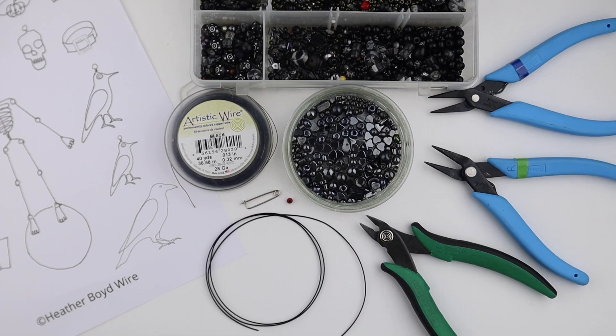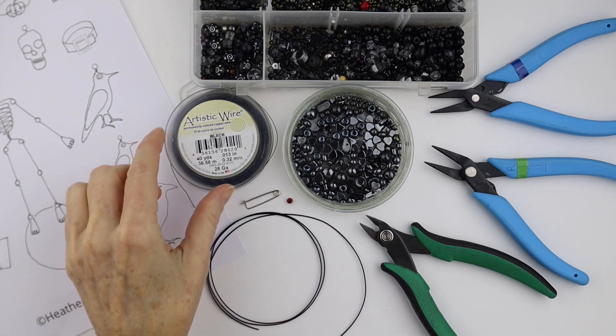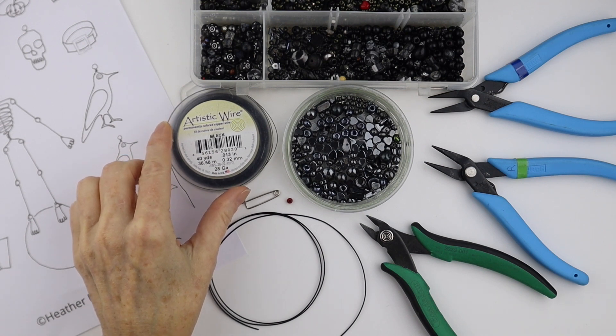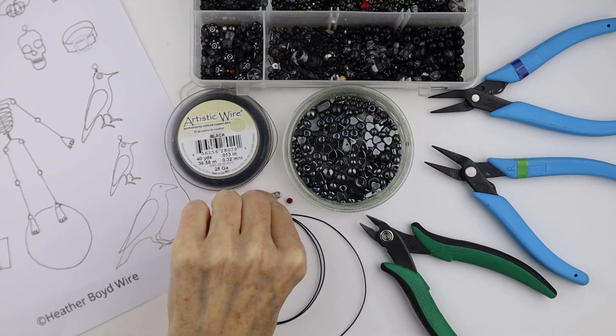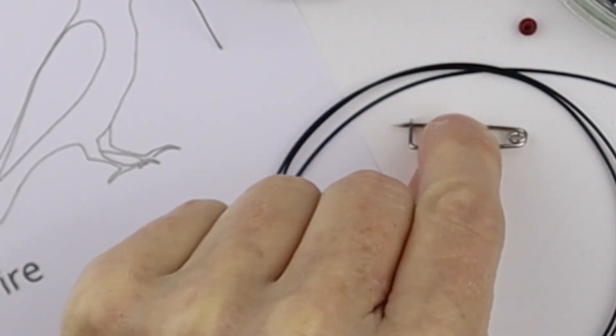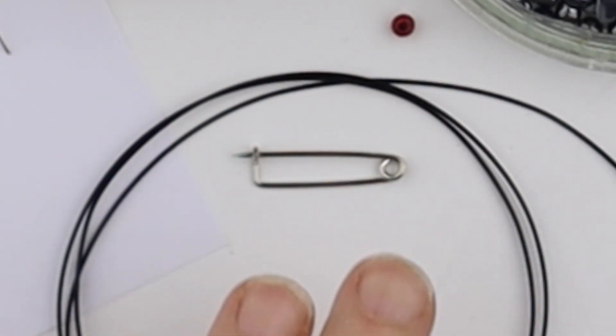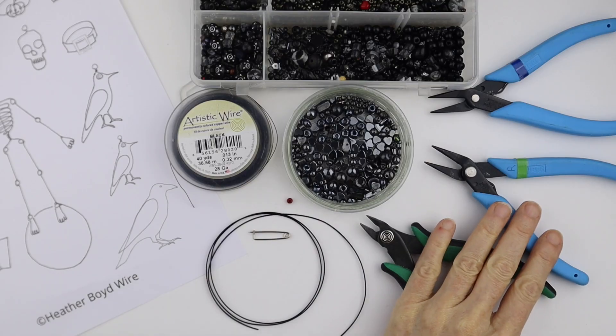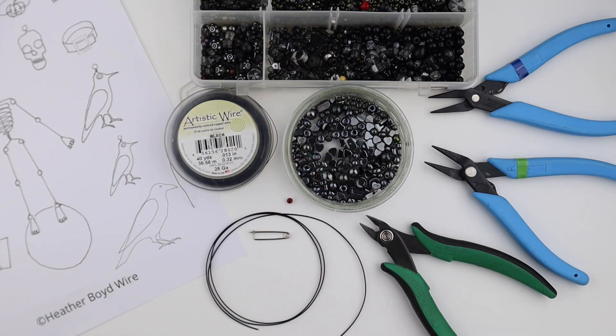What you're going to need for this project is 20 gauge wire. I'm using black wire. You'll need some thinner wire to wrap in some beads. I have 28, you can use 26 or 24 gauge wire. I have a little pin back you can get in my Etsy DIY shop. You need your tools. I have a variety of hematite and black beads and I have the template available in my Etsy DIY shop as well.